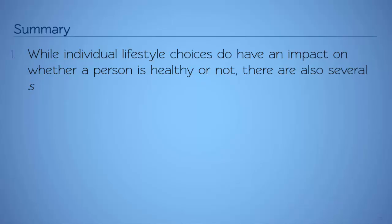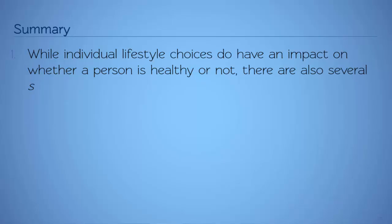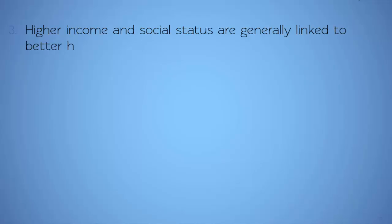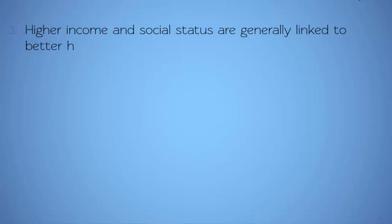In summary, while individual lifestyle choices do have an impact on whether a person is healthy or not, there are also several social correlates of health and illness to consider. Second, the social correlates of health can include the social and economic environment, the physical environment, material and economic factors and a person's individual characteristics and behaviours. Third, higher income and social status are generally linked to better health. The greater the gap between the richest and poorest people in society, the greater the differences in health outcomes.